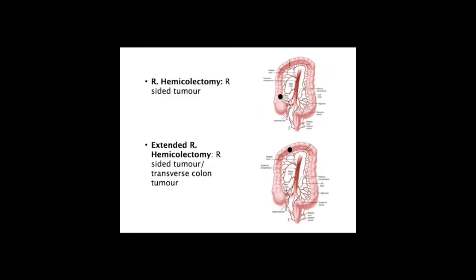For a tumour on the right side, you perform a right hemicolectomy, incising from the ileocolic area right up to the transverse colon. If the tumour is high up in the ascending colon or in the first part of the transverse colon, you perform an extended right hemicolectomy, extending the resection further along the transverse colon to include the entire area supplied by the superior mesenteric artery. This operation is also used when better mesenteric nodal clearance is needed.